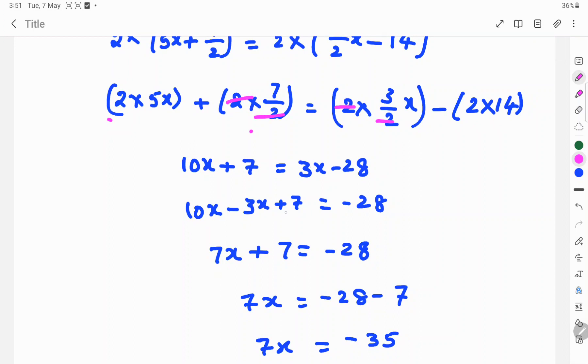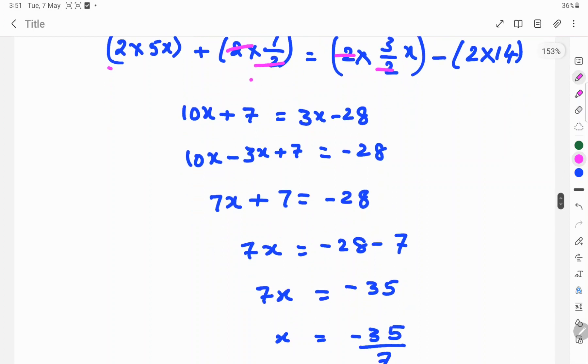10x minus 3x, change to right hand side then minus 3 plus 7 equals minus 28. 10x minus 3x is 7x plus 7 equals minus 28.